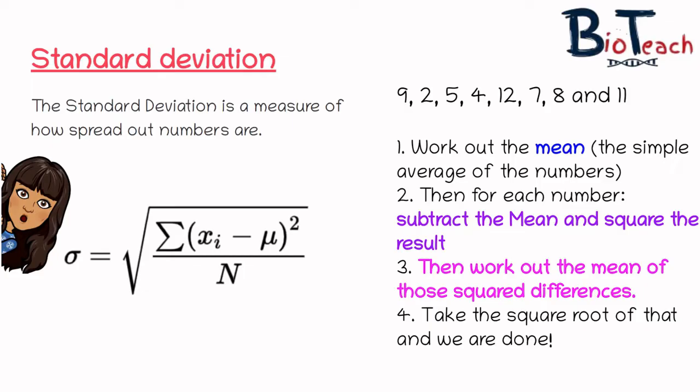In order to work out the standard deviation, the first thing we need to do is work out the mean, represented by this sign over here. This is just the simple average of all of the numbers — you simply add them together and divide by the number of numbers there are, so in this case there are 8, and that gives you your mean.